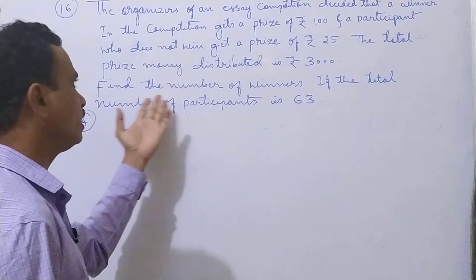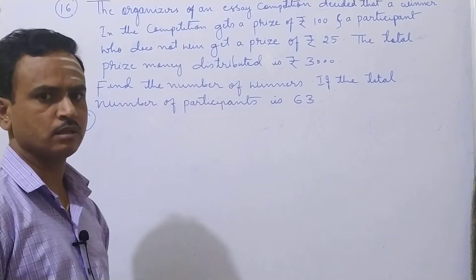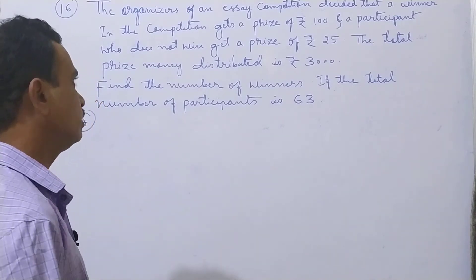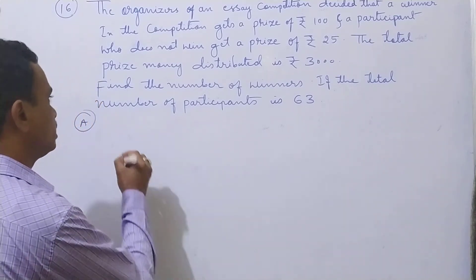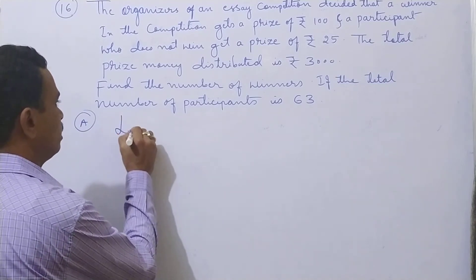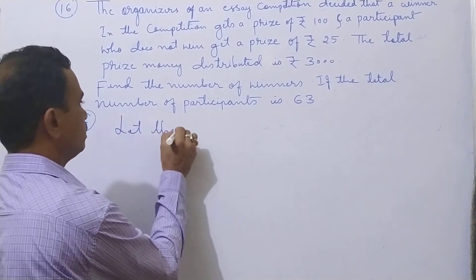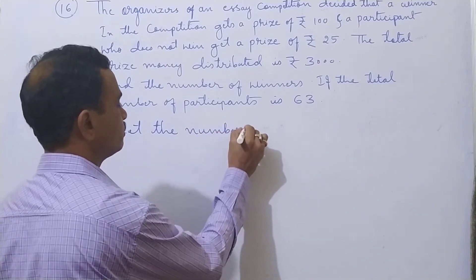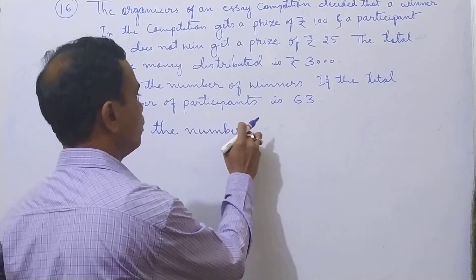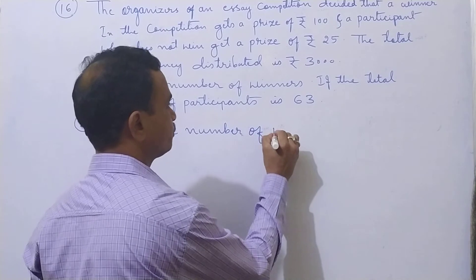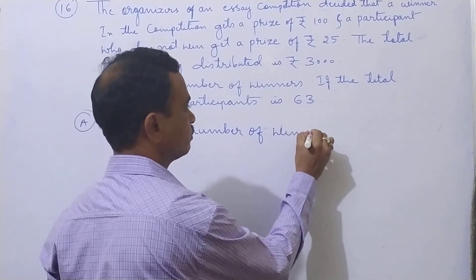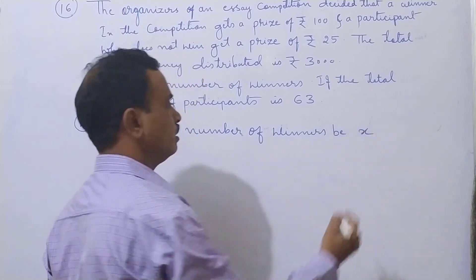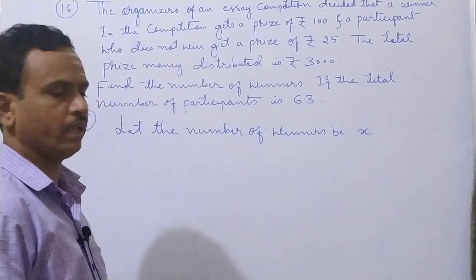We should find the number of winners — we don't know that. So here we should take: let the number of winners be X.